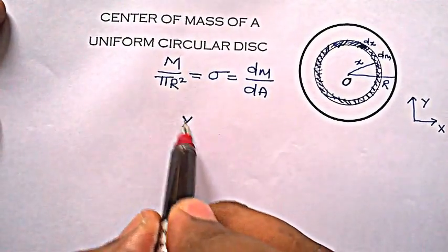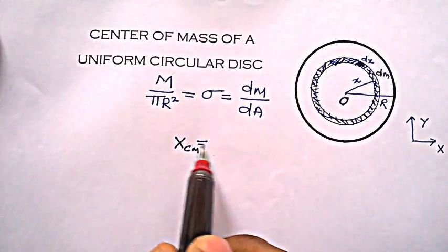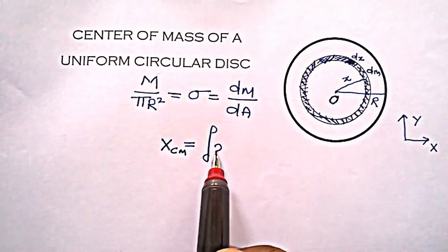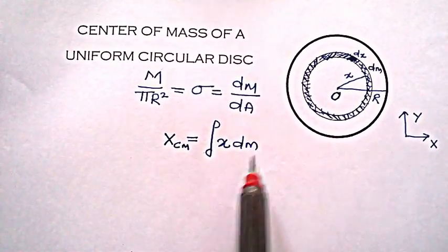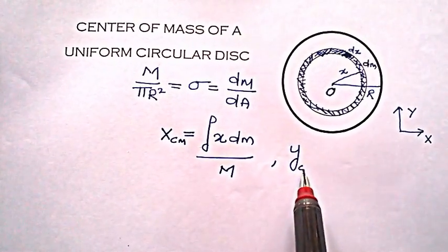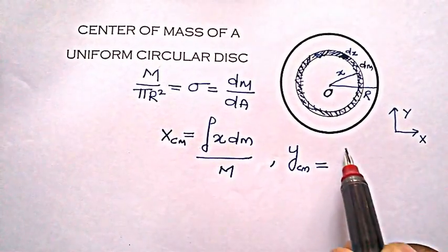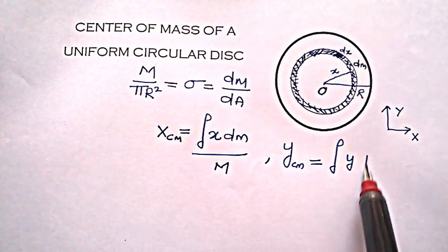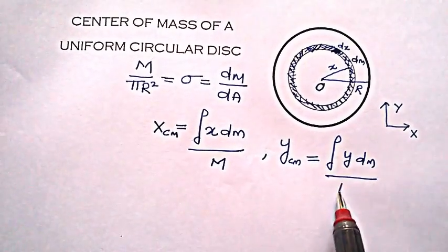Now as we know, the coordinate of center of mass along x is xcm = ∫x dm / M, and ycm = ∫y dm / M.